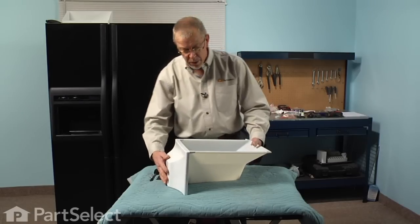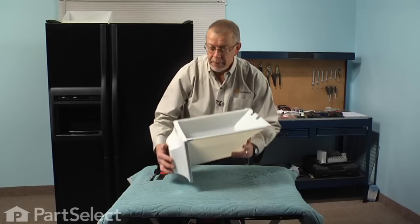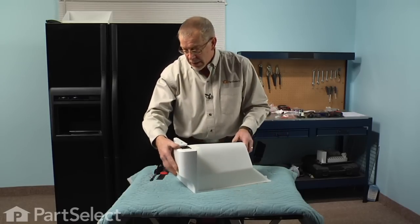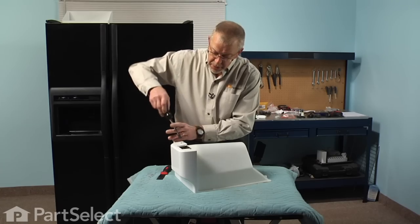Once we have the bin on a suitable work surface, we'll first empty any of the remaining ice out of it, and we're going to turn it upside down and start by removing the two quarter inch hex head screws from the bottom side.